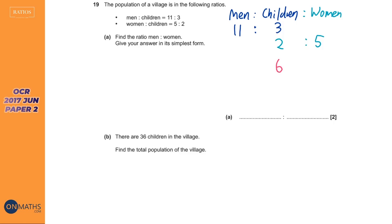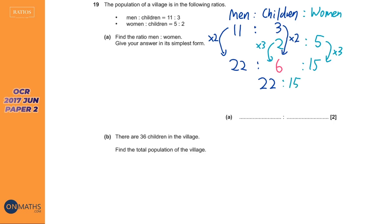We need to get them both to six. For the first ratio, I'm going to times it by two — whatever you do to the left hand side of a ratio you've got to do to the right — so times by two gives 22. For the second ratio I need to times it by three, which gives 15. Now if I remove the children from it, you can see it's going to be 22 to 15. That is my answer. When combining ratios, make sure the part they have in common — children in this case — has the same amount. I converted 11 to 3 into 22 to 6, and 5 to 2 into 15 to 6, then combined them.